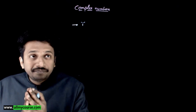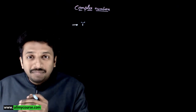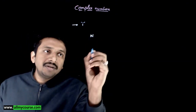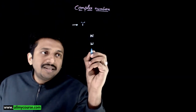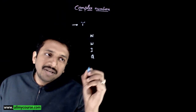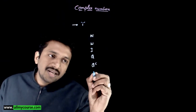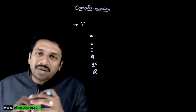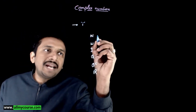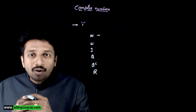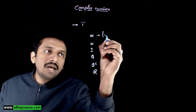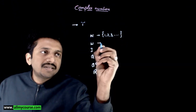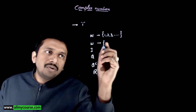You know different sets of numbers from your lower classes: the set of natural numbers, the set of whole numbers, the set of integers, rational numbers, irrational numbers, and real numbers. Natural numbers is the set of counting numbers starting with 1, 2, 3, and so on up to infinity. Whole numbers adds a 0 to the natural number set.